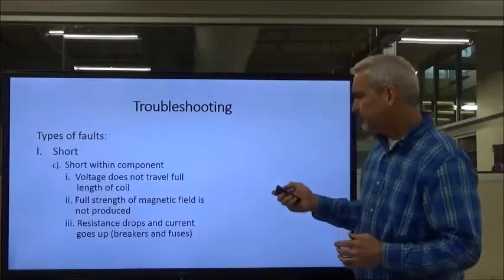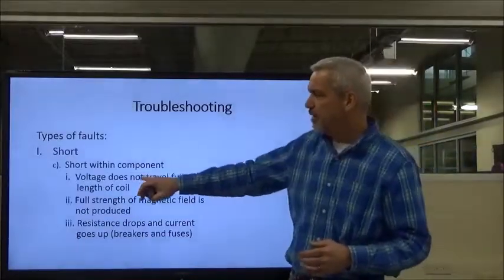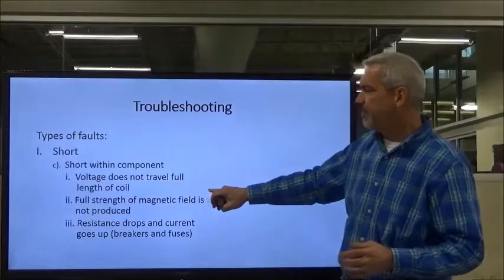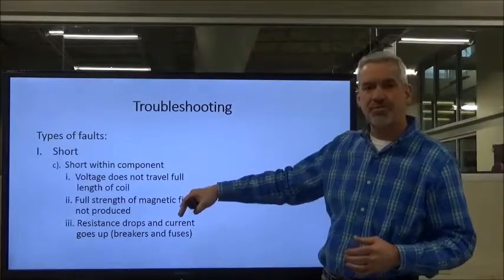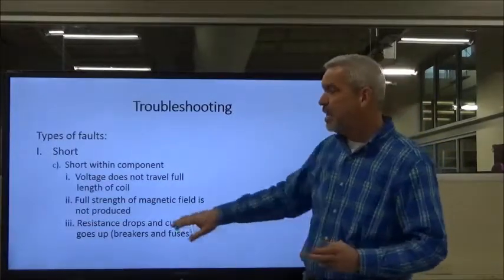Going back — when the resistance drops, the current goes up, and we start popping breakers and fuses. If you've got a breaker or fuse you're having to replace or reset, it's telling you something. If it does it once, you can probably get away with it. If it comes back again, even three, four, five hours later, you're starting to see problems — degradation. Something's going on. Don't ignore it, don't reset it, and please don't put bigger fuses in it.